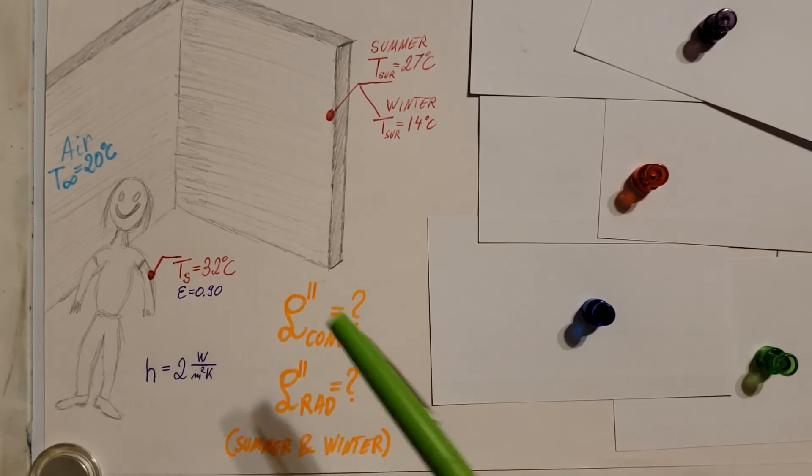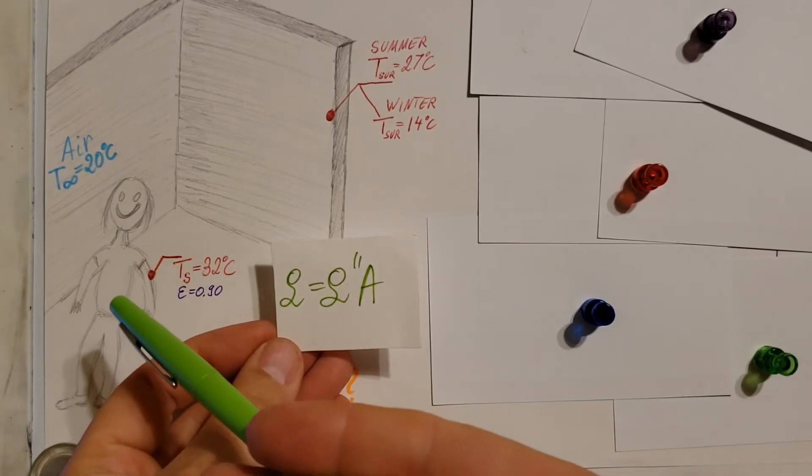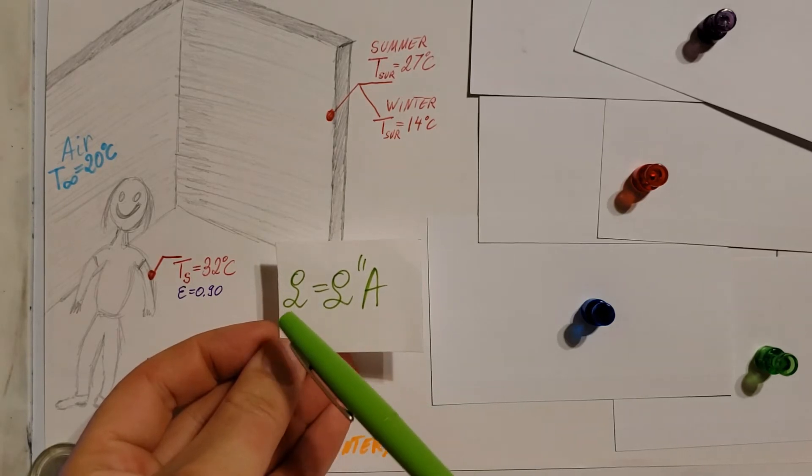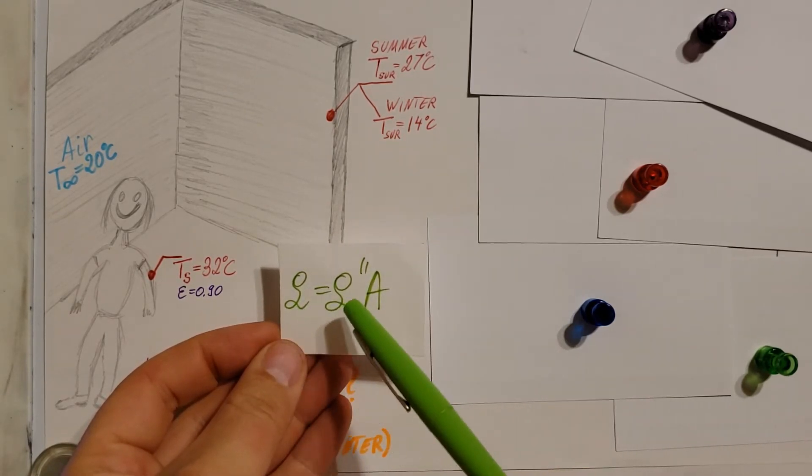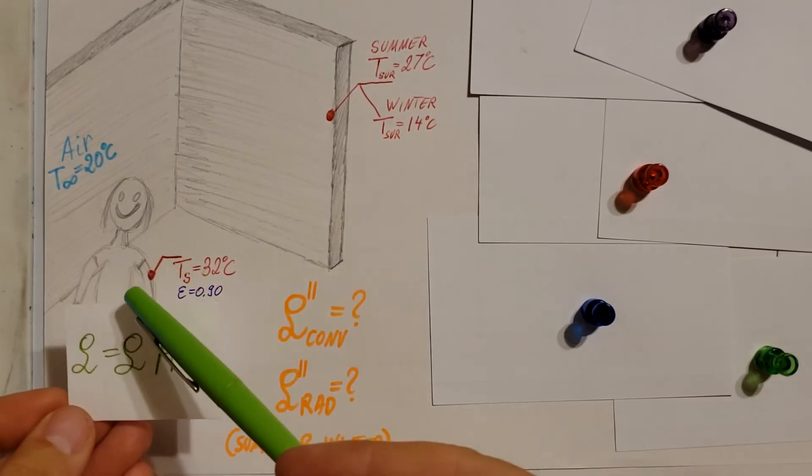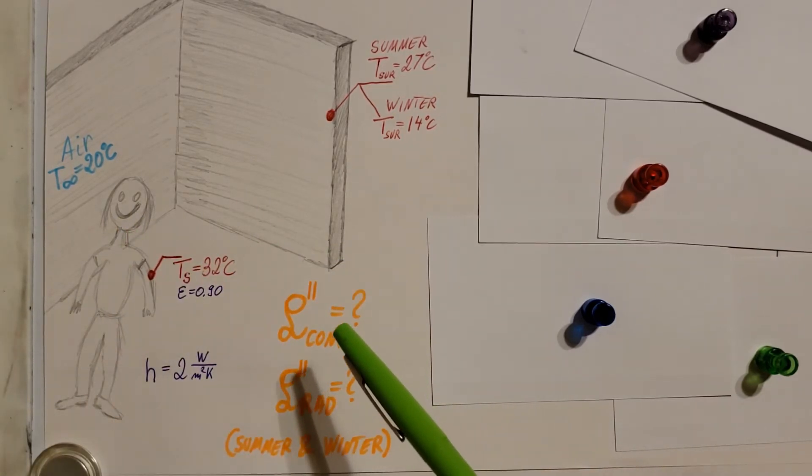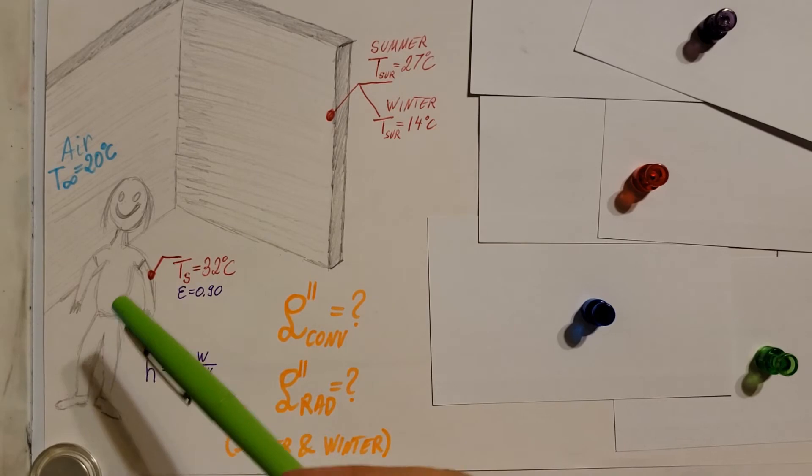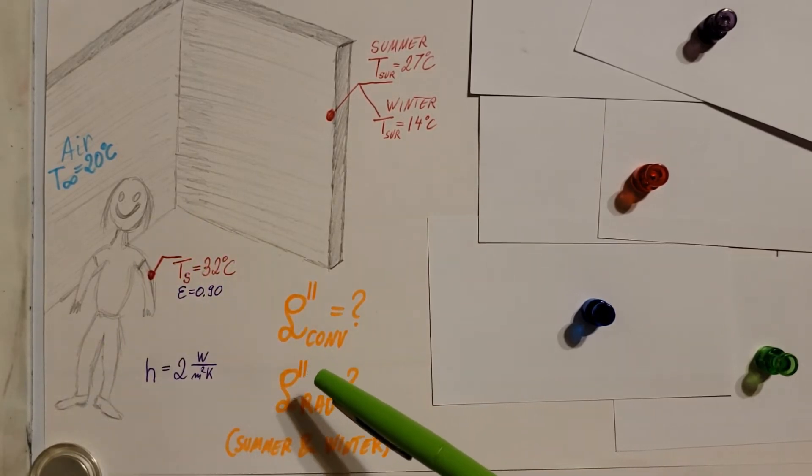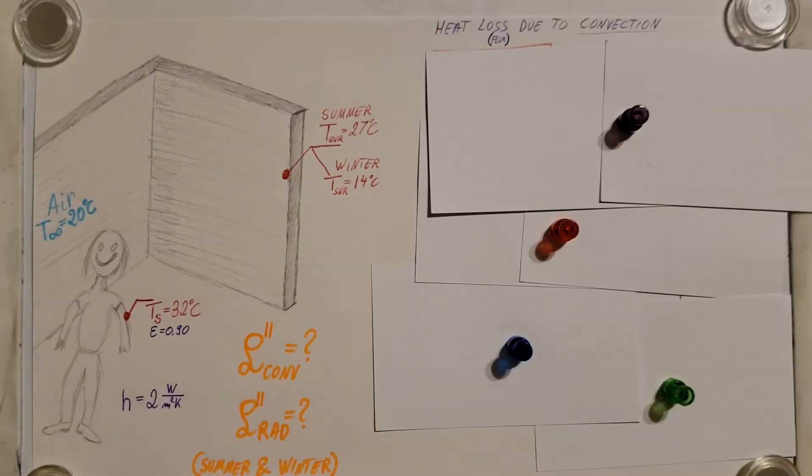Well, we don't really have any areas given here. We don't have the surface area of the person. We don't have the surface area of the wall. So we can't really go and calculate our Q. But we can go ahead and calculate what kind of flux is happening from the person. We're going to calculate based on convection how much flux is happening from the skin and also the flux due to radiation. And both of them, we're going to take a look at it in the winter and the summer.